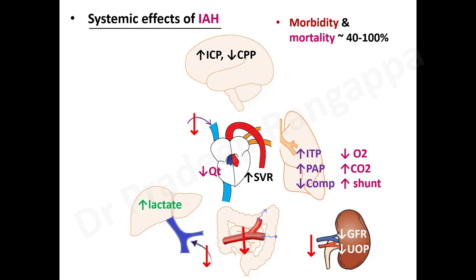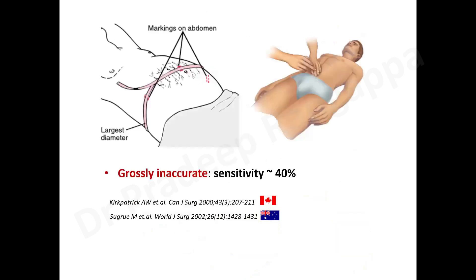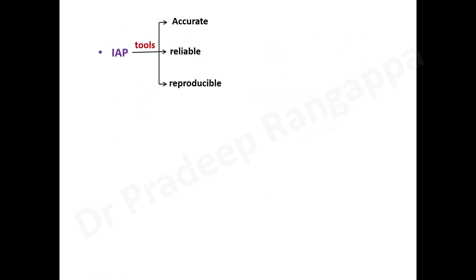Abdominal compartment syndrome affects multiple organs and can lead to organ dysfunction and failure. Traditionally surgeons measured abdominal girth, but studies have shown this is grossly inaccurate, with a sensitivity of only 40%. Measuring abdominal girth has become almost obsolete because its ability to recognize worsening intra-abdominal hypertension is very poor.